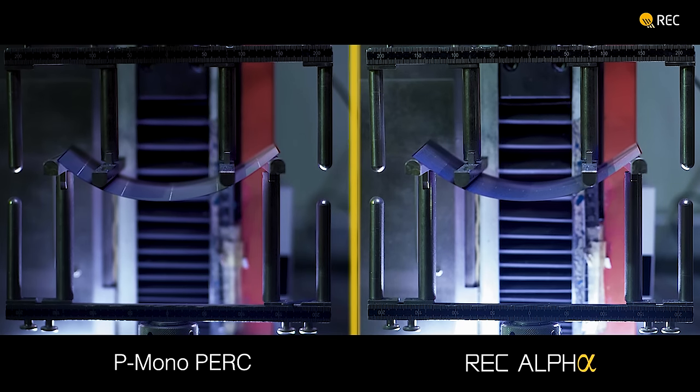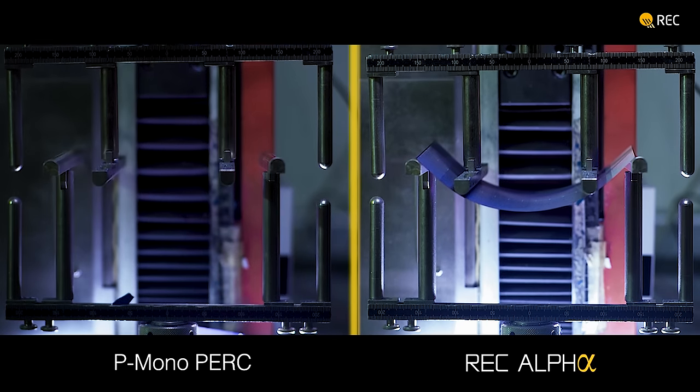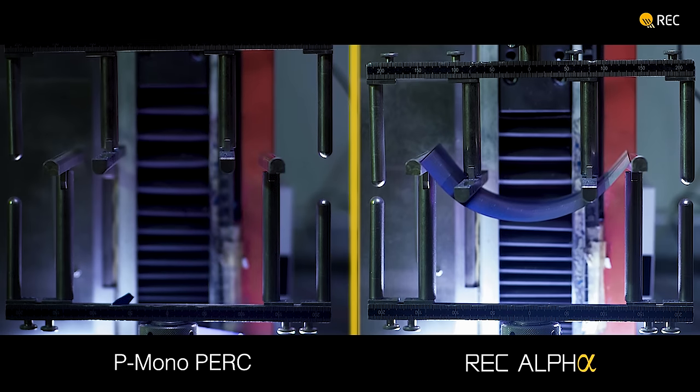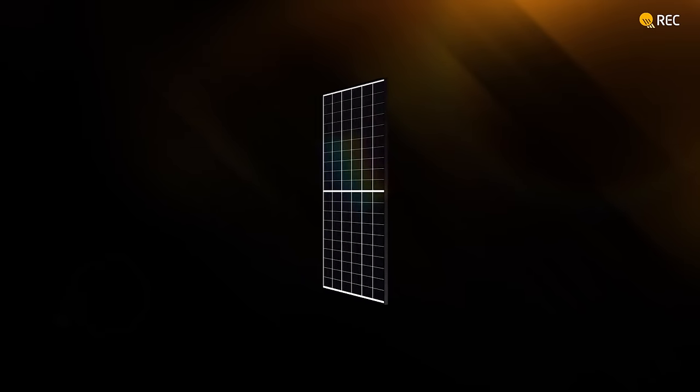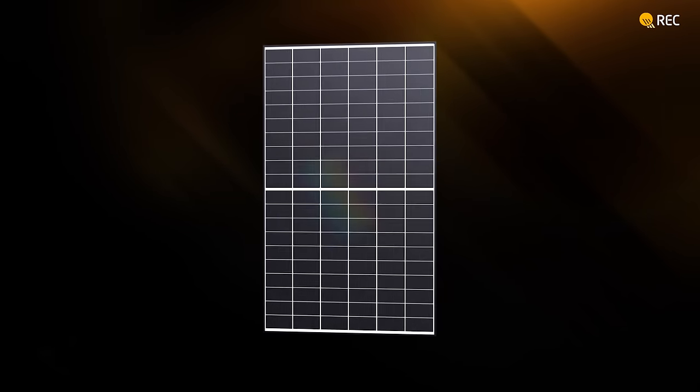Ensuring such high quality through the production process delivers advantages that can already be seen in the cell. A higher resistance to defects translates to a more durable solar panel and longer lifetime once installed.